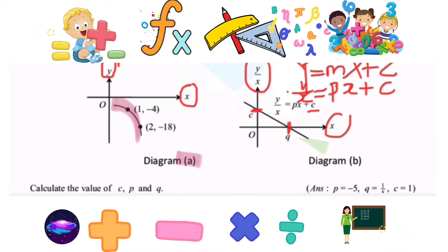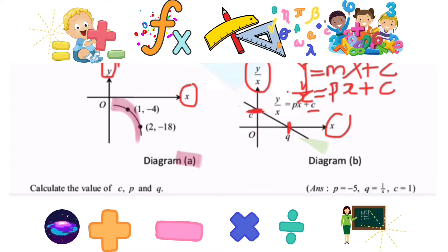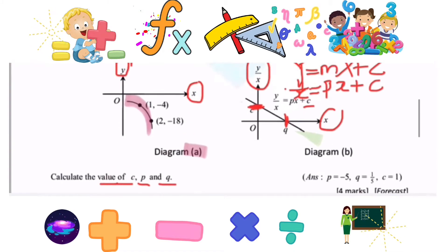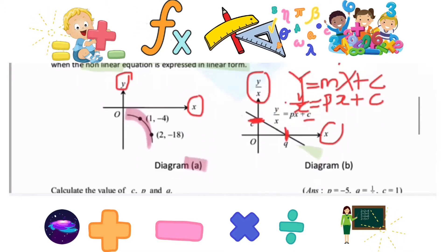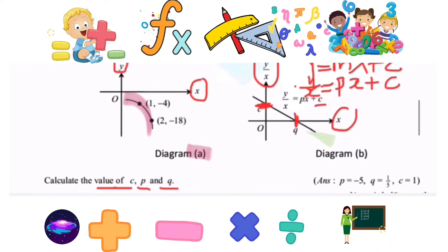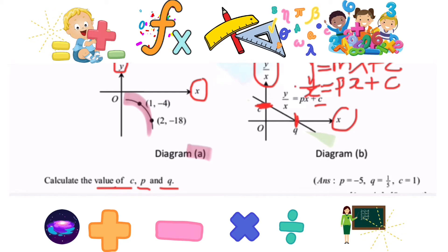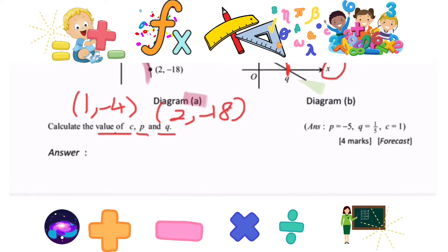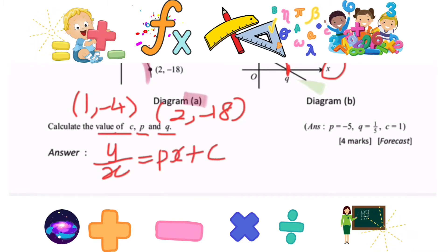To find the gradient, we find the y-intercept and x-intercept. To find the values of c, p, and q, we compare the points (1, -4) and (2, -18). We are going to use the equation px + c.